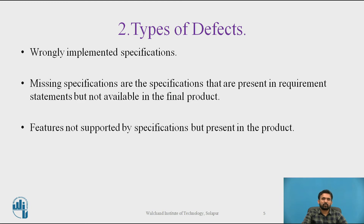Regarding types of defects: wrongly implemented specifications are related to specifications as understood by developers differing significantly from what the customer wants — these may be termed misinterpretation of specifications. Missing specifications are those present in requirement statements but not available in the final product, as there is no requirement tracing through product development.